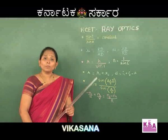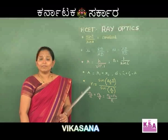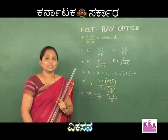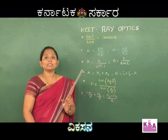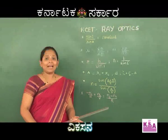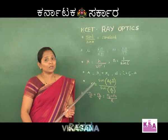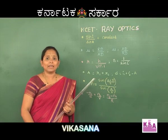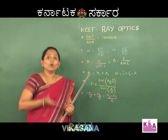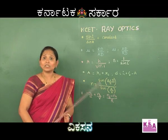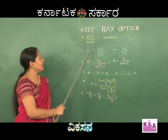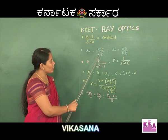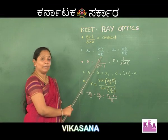Students, there are two important cases to note. In one case, if the object is placed in the denser medium and the observer is in the rarer medium, it appears to the observer that the image is formed more closer to him. In such a case, the refractive index is given as the ratio of real depth to apparent depth.